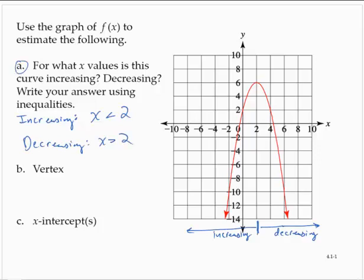The vertex is the highest or lowest point on the parabola. In this case, that's our vertex. The vertex is an ordered pair. So the vertex is the ordered pair (2, 6).